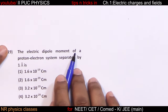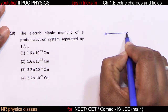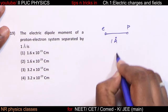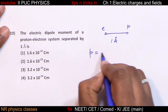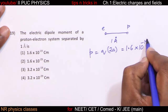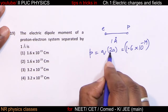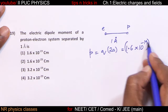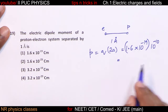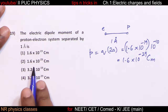The electric dipole moment of a proton-electron system separated by 1 angstrom. Dipole moment = Q × 2a, where 2a is the distance between charges = 1 angstrom = 10⁻¹⁰ meter. Q = 1.6 × 10⁻¹⁹ coulomb. Therefore dipole moment = 1.6 × 10⁻¹⁹ × 10⁻¹⁰ = 1.6 × 10⁻²⁹ coulomb meter.